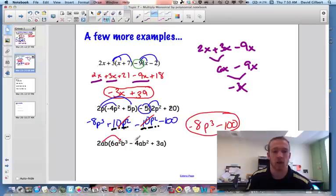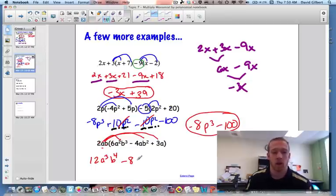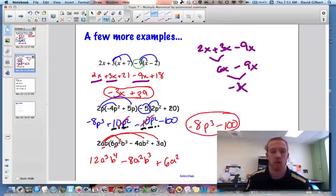And then the last one. Alright. So now you've got to really remember the exponent rules from the first couple topics. You can always go back and revisit those videos. 2 times 6 is 12. We have an a and an a squared, so that's a cubed. b and b cubed is b to the 4th. Minus 2 times 4 is negative 8, a squared b cubed. Remember, you're multiplying the same bases, so you add the exponents. And plus 2 times 3 is 6, a and a is a squared, and b. That is our final answer.